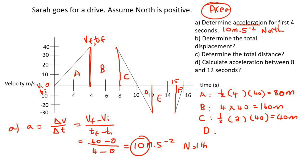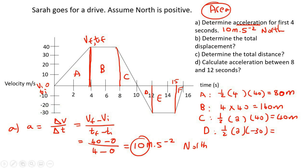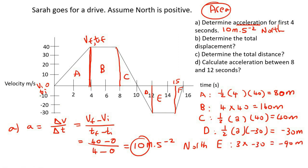For area D — a triangle — it's half times base from 10 to 12, which is 2, and the height goes to negative 30, giving negative 30 meters. For area E — a rectangle — from 12 to 15 is a base of 3, times negative 30, giving negative 90 meters. And the last triangle: half times base from 15 to 16, which is 1, times height of negative 30, giving negative 15 meters.